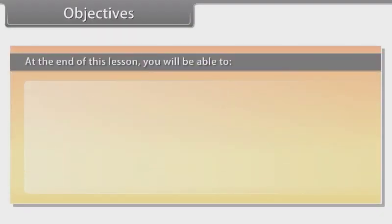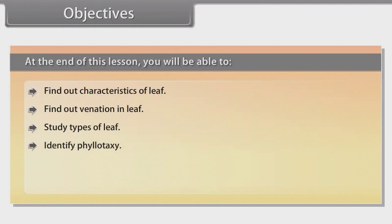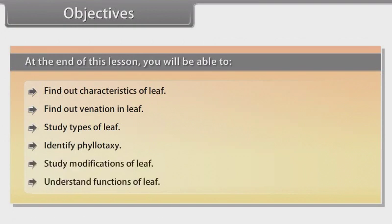Objectives. At the end of this lesson you will be able to: find out characteristics of leaf, find out venation in leaf, study types of leaf, identify phyllotaxy, study modifications of leaf, and understand functions of leaf.